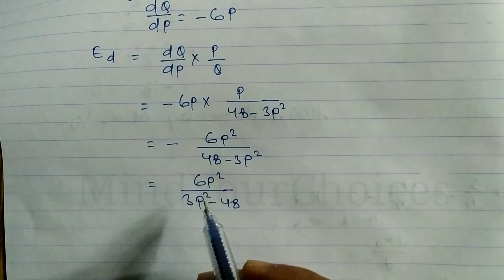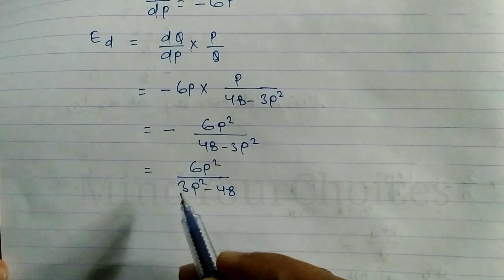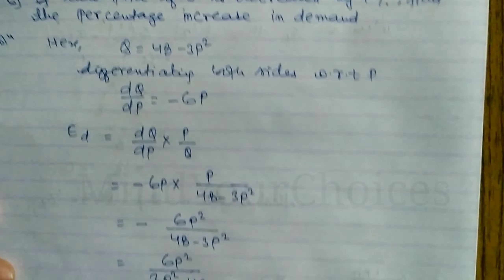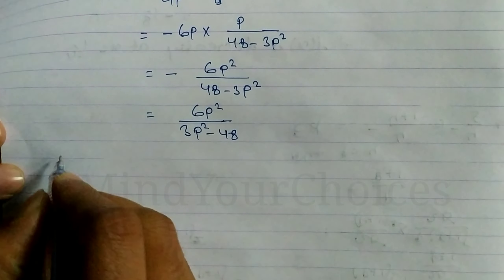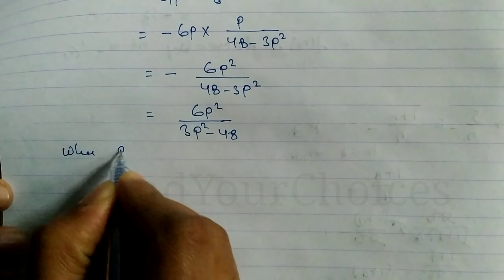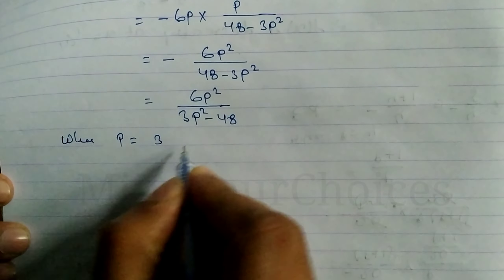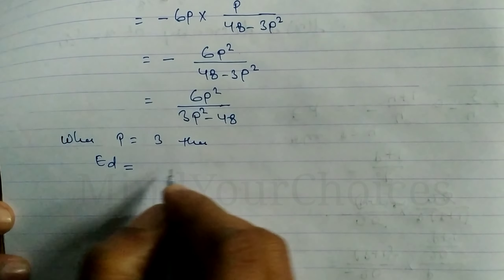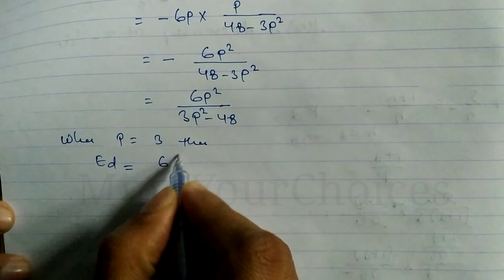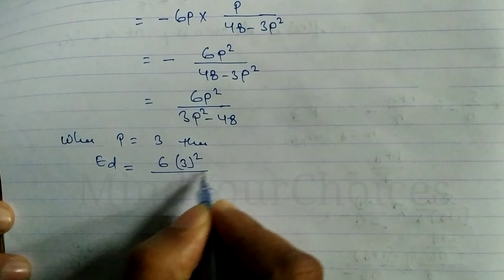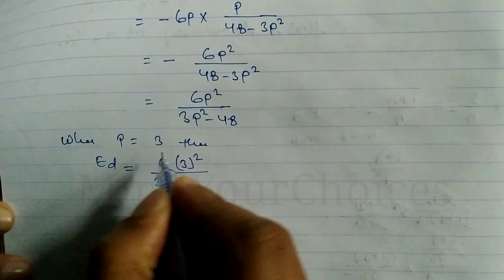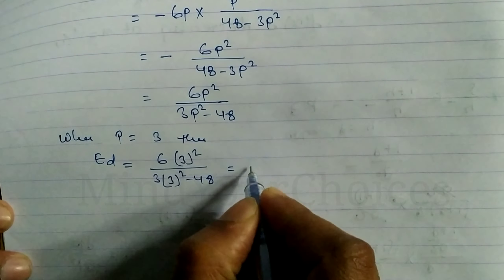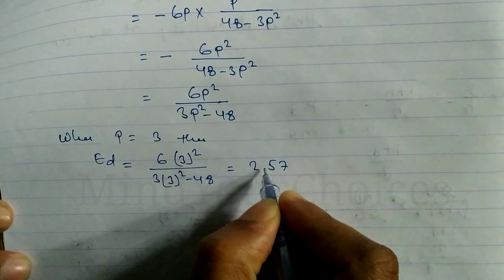Now we need to find the value when p = 3. Substituting p = 3 into the elasticity formula: 6 × 3² divided by (3 × 3² - 48). So 6 × 9 divided by (27 - 48). When you calculate this, we get 2.57.